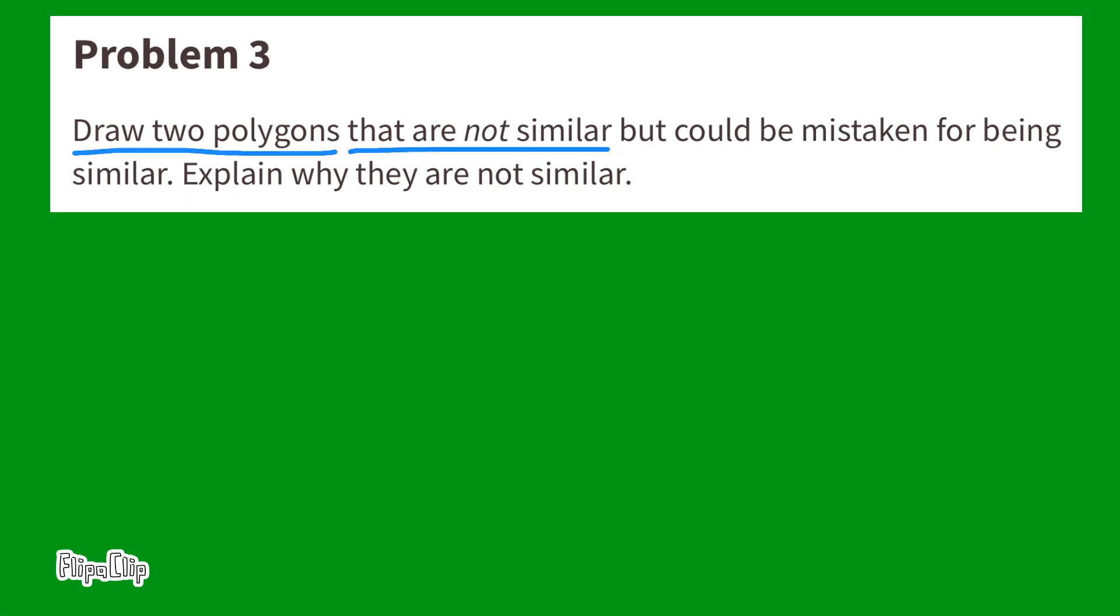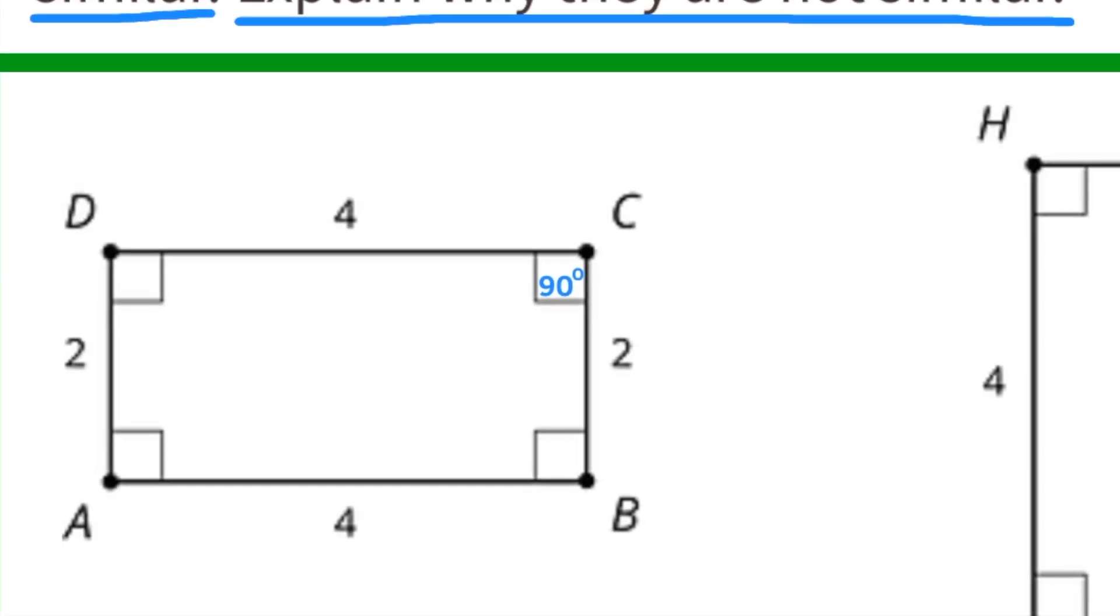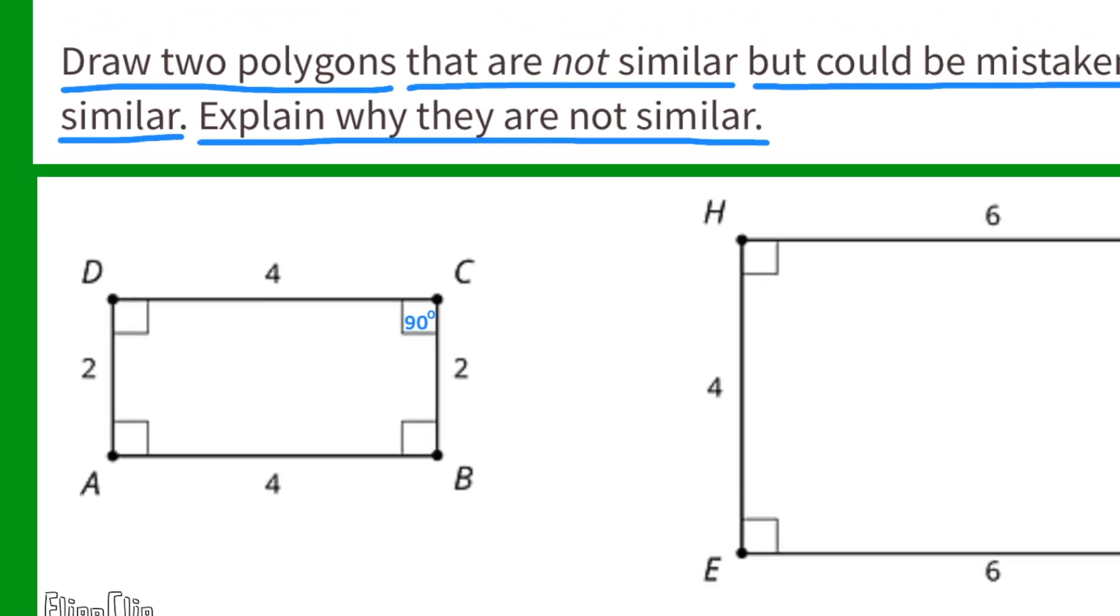Problem number three. Draw two polygons that are not similar but could be mistaken for being similar. Explain why they are not similar. Here are two polygons that are not similar but could easily be mistaken for being similar. One reason why they look similar is they're both made of 90-degree angles.